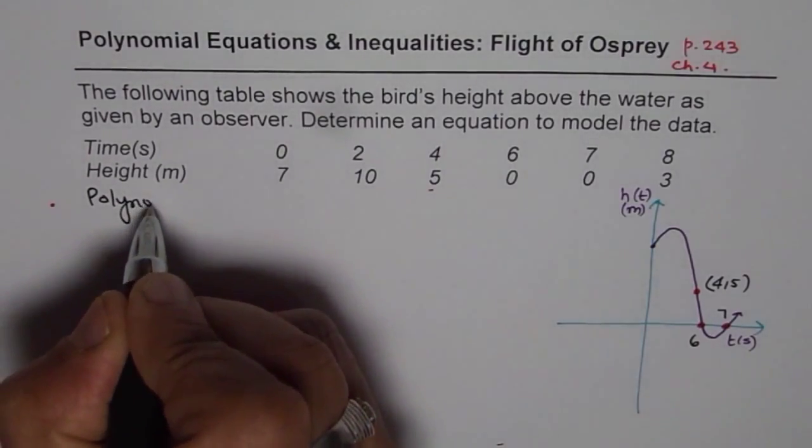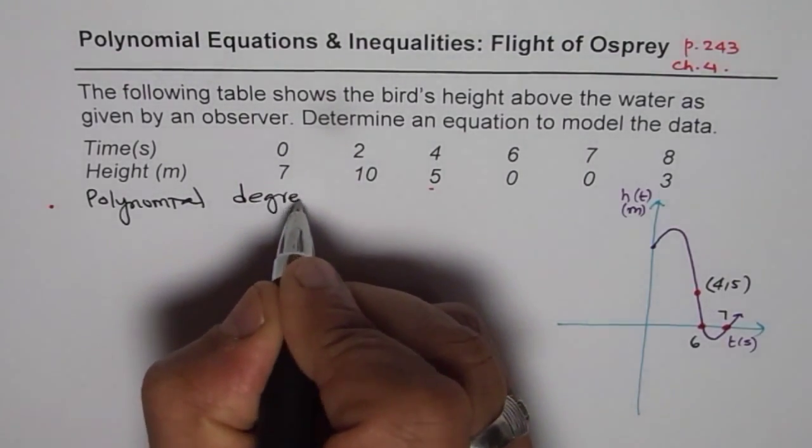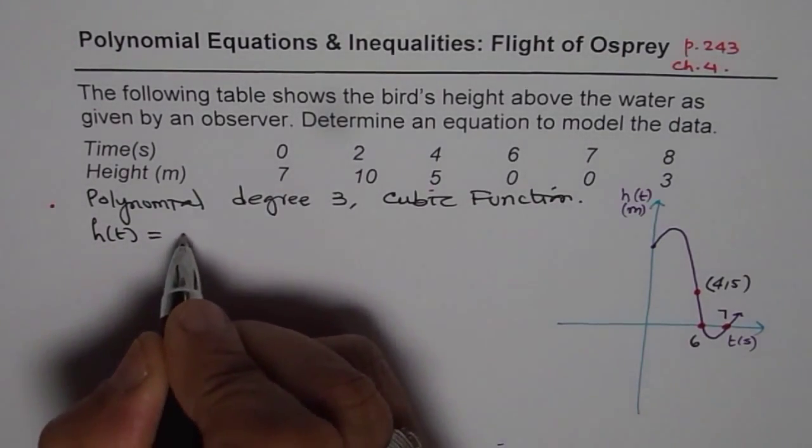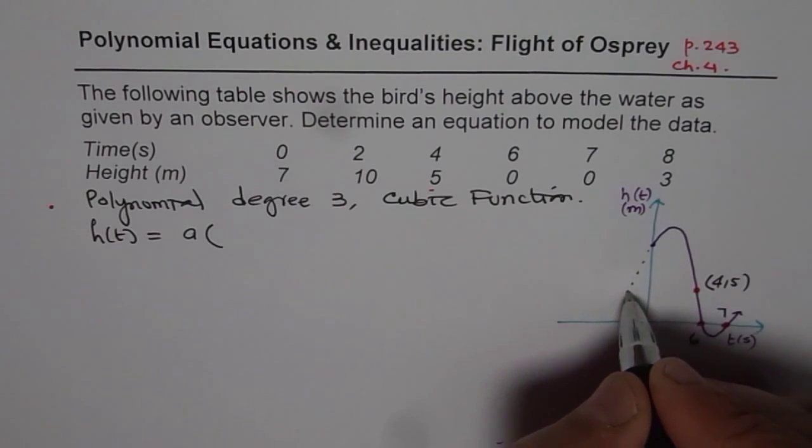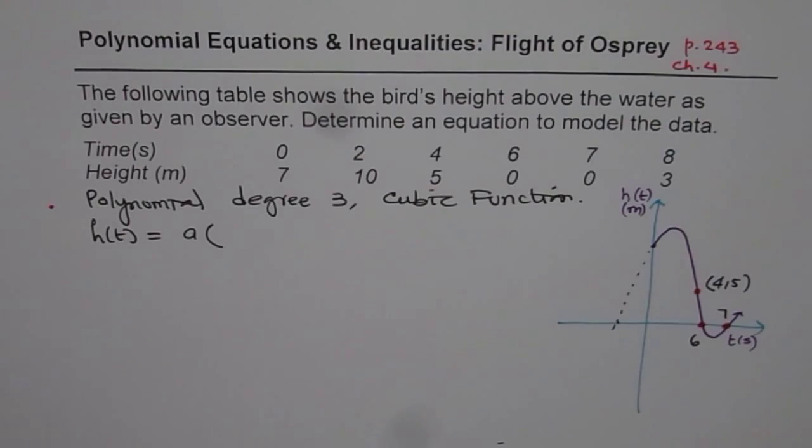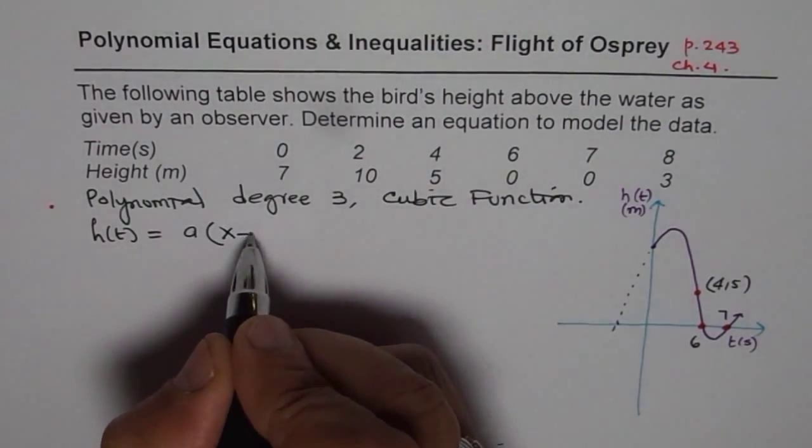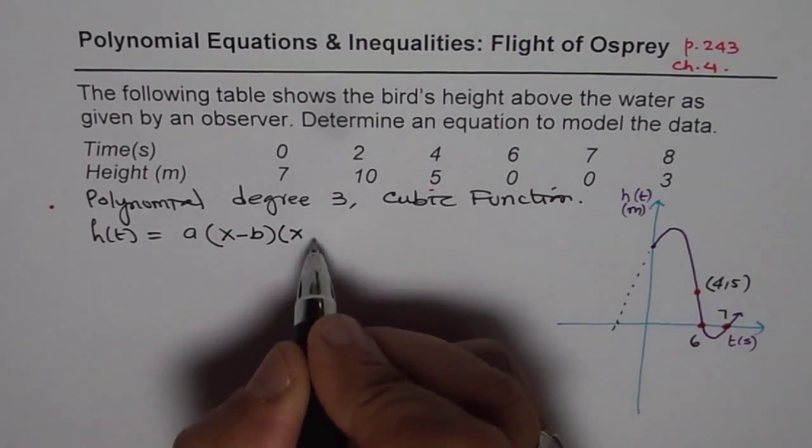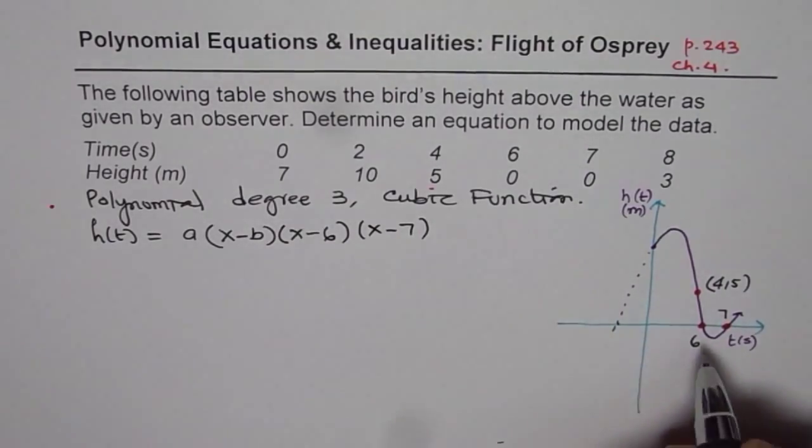Now taking these three points what we are assuming here is a polynomial degree 3, that is cubic function, to start with. So we are modeling this situation with a cubic function. So we say height h of t is a times, we know two factors, we do not know one. There could be one more. This point makes it cubic. We do not know that. So we will say x minus b times, we know these two, that is fortunate: x minus 6 and x minus 7. Otherwise this would have been hell. Even now it is a difficult question. Now we can say let this be the polynomial representing the data given to us.